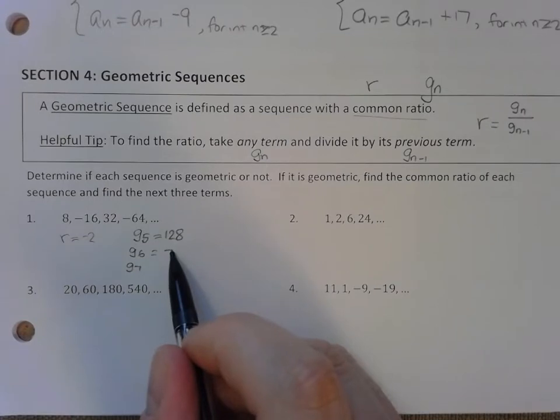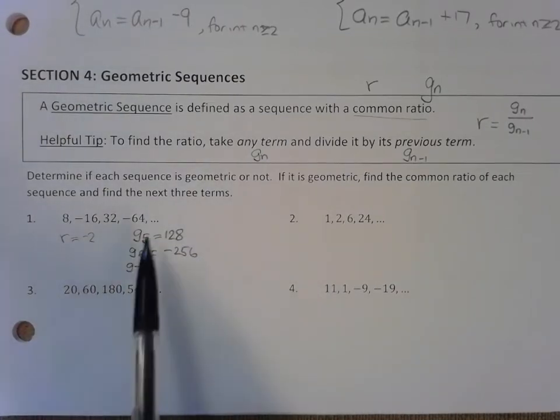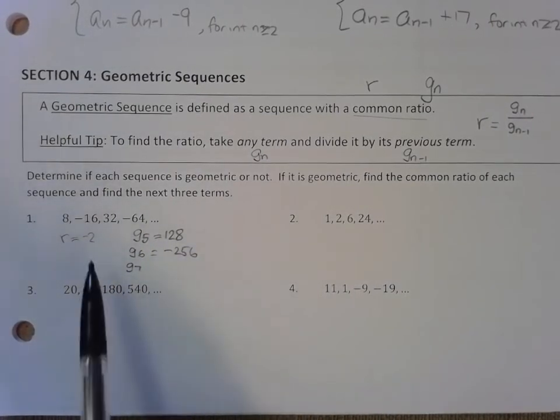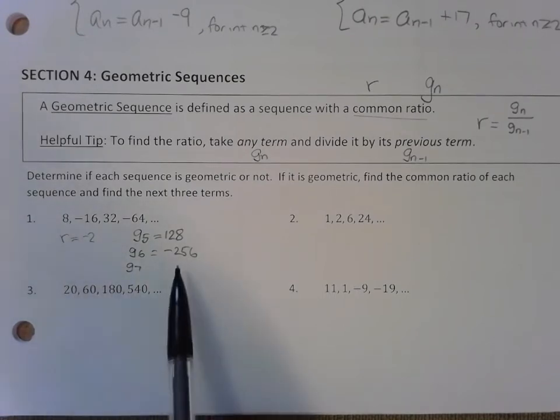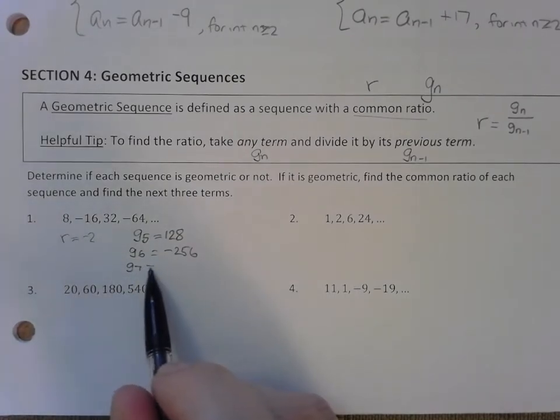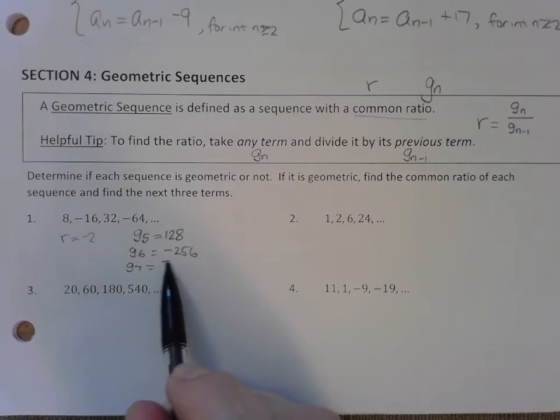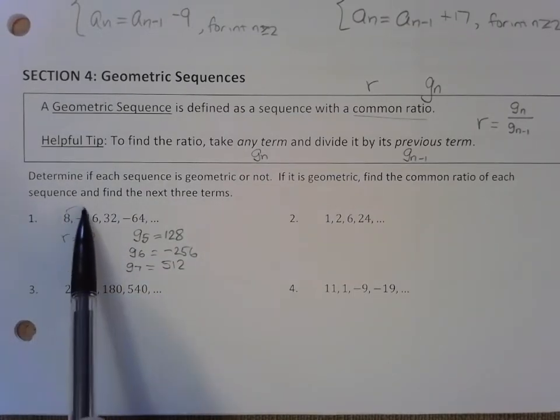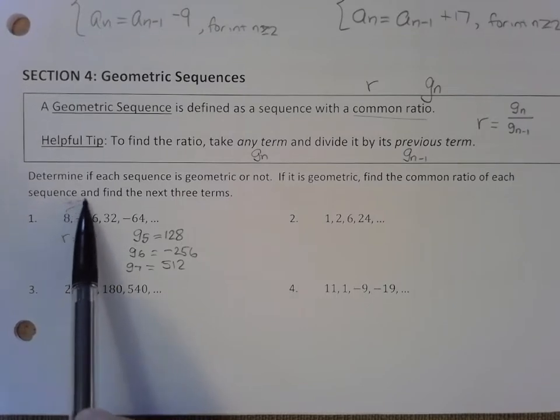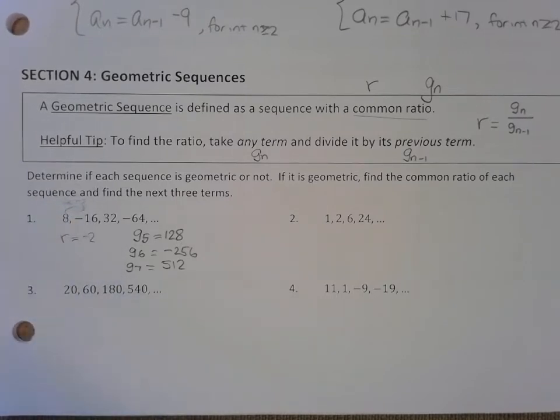And let's continue to find g sub 6 and g sub 7. Negative 256. I just take negative 2 and multiply the 5th term to get to the 6th term. I take negative 2 and multiply the previous term to get to the next term. And here we go. Positive 512. So that first one went pretty well. We just remind you, we're multiplying by a ratio of negative 2 each time we move down to our next term.